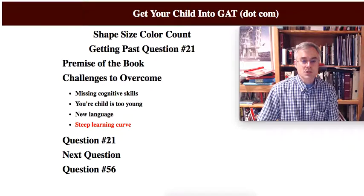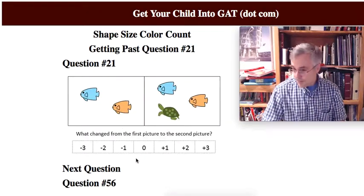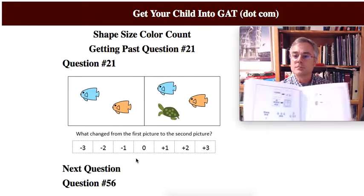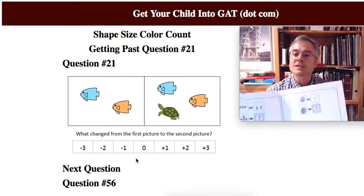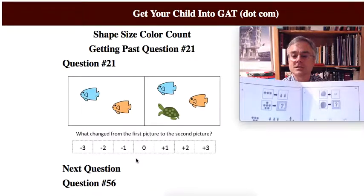Okay, so let's jump into question 21. Here it is. Now when you're ready for full-blown test prep, you're going to get questions like this with quantitative or figure matrices. These questions are from Smart Cookies CogAT Form 7 practice test book, which is one of my favorites.